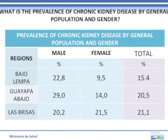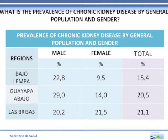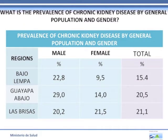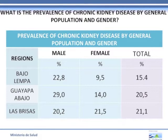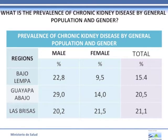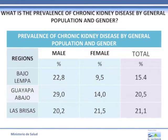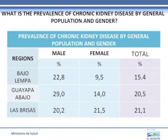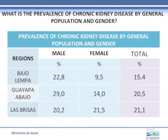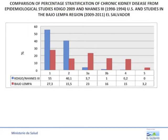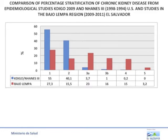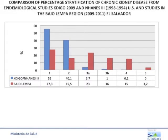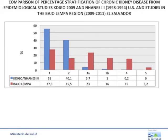What is the prevalence of chronic kidney disease by general population and gender? The prevalence of CKD in Bajo Lempa, Guayapa Bajo, and Las Brisas was high: 15.4%, 20.5%, and 21.1% respectively, with a 2-to-1 male-to-female ratio, except in Las Brisas in the Nefro Oriente study. When comparing with NHANES from the USA, the staging of CKD studies in El Salvador showed a progressive decrease from stage 1 to 5.